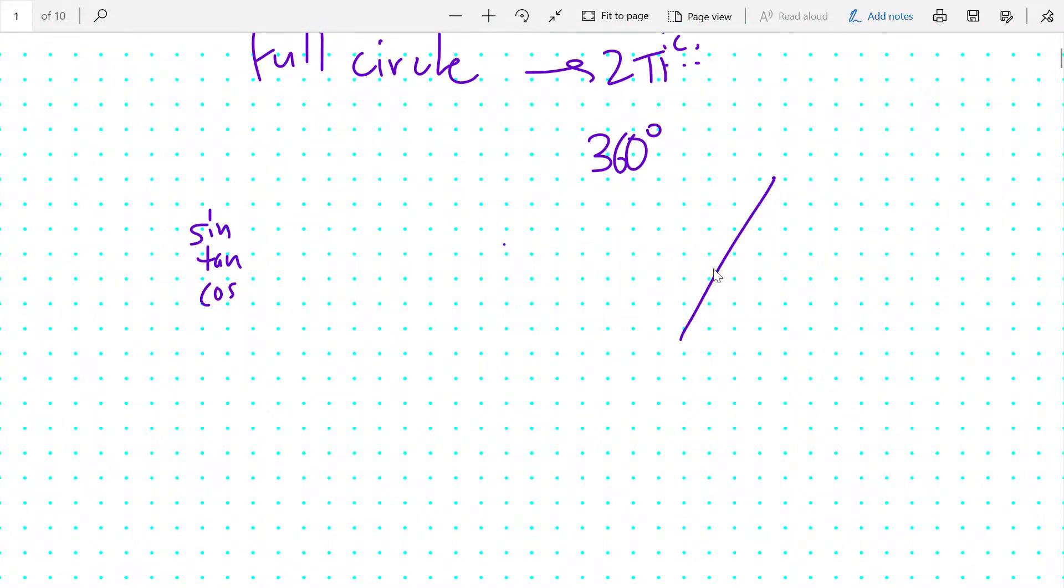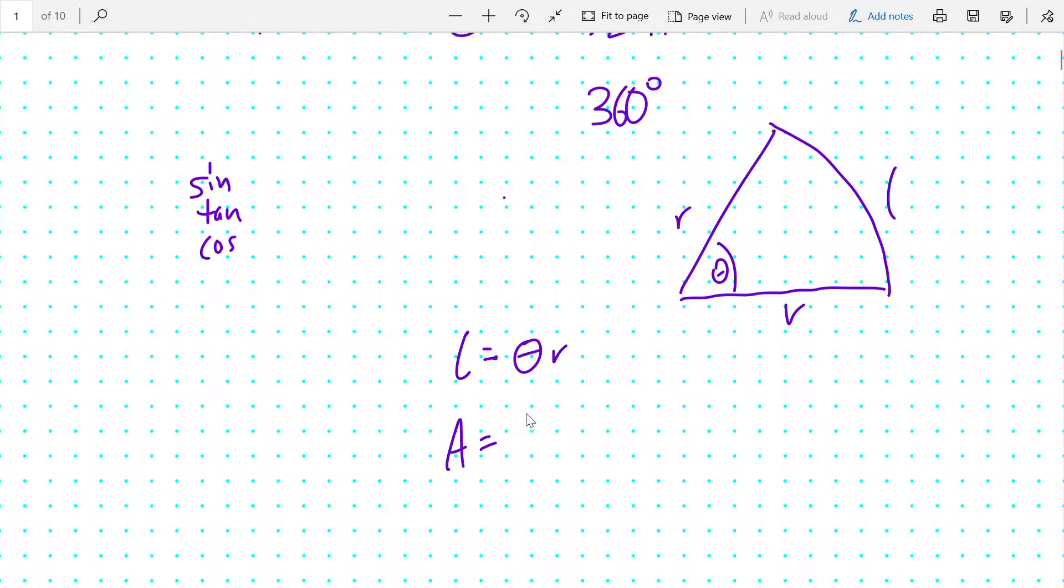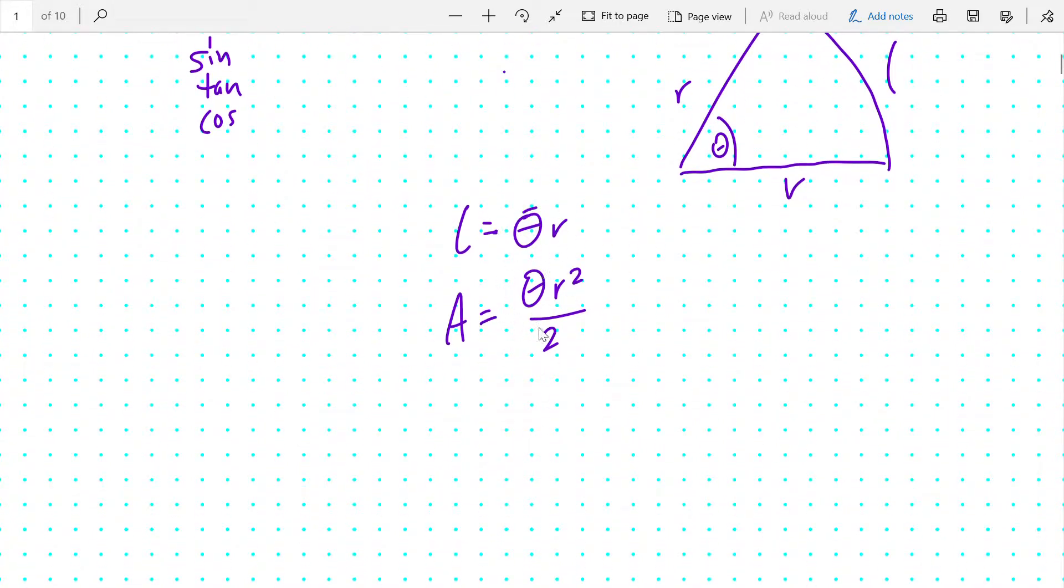You would also need to know that for a given sector of a circle, a portion of a circle with radius r, angle θ, and length l, the arc length l is equal to θ times r, and the area of a sector is equal to θr² divided by 2, where θ is always the angle in radians.